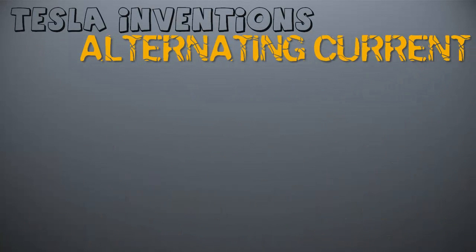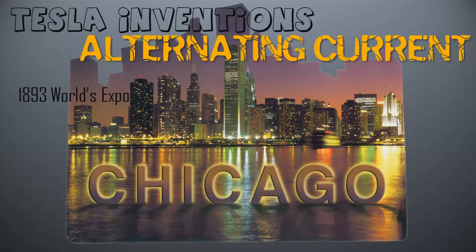Tesla, inventions, alternating current. This is where it all began, and what ultimately caused such a stir at the 1893 Chicago World's Expo.